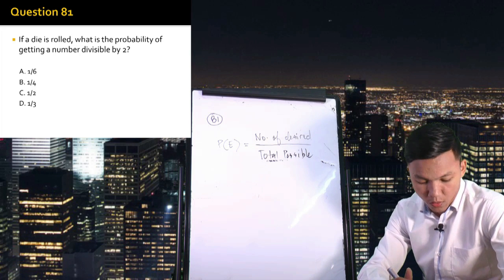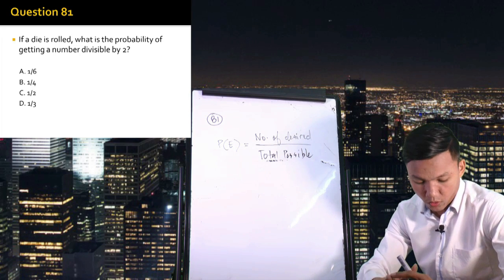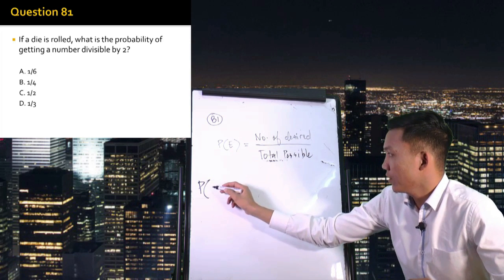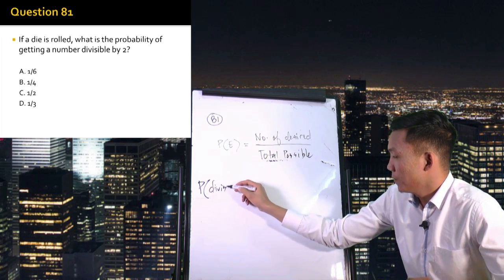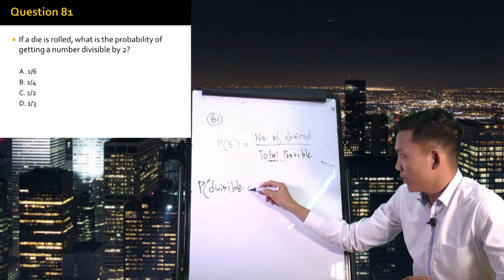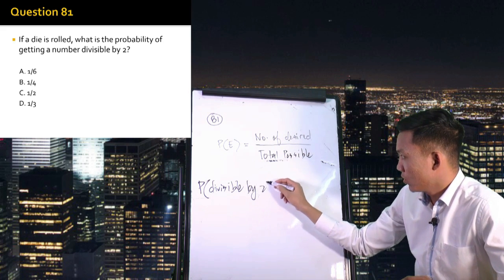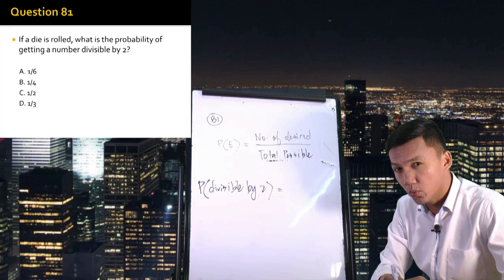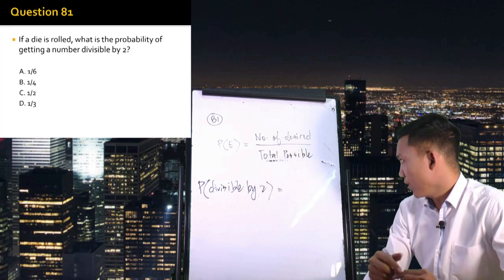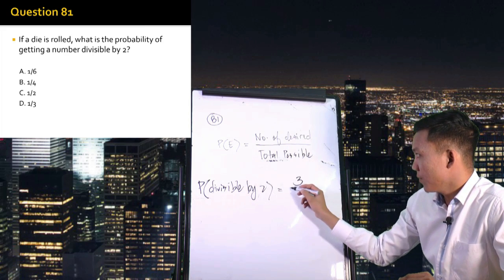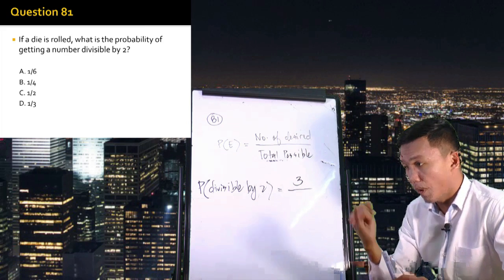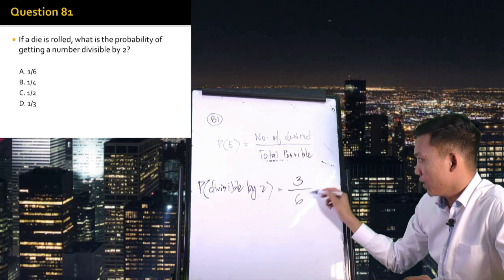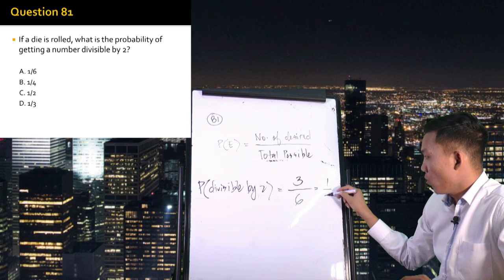In this case, we rolled a die once. The probability of rolling a number divisible by 2 equals the number of desired outcomes — the numbers divisible by 2 are 2, 4, and 6, giving us 3 desired outcomes — over the total possible outcomes. A die has 6 faces: 1, 2, 3, 4, 5, and 6. So the answer is 3 over 6, or simply 1 over 2.